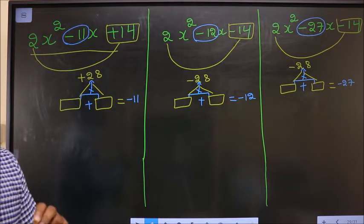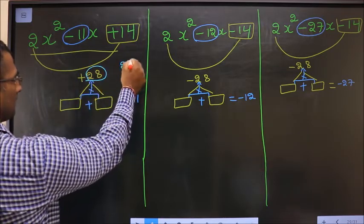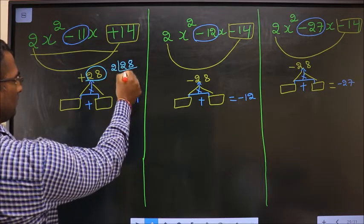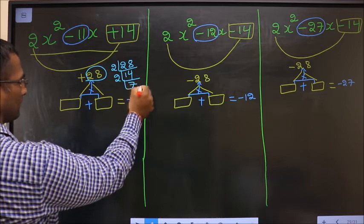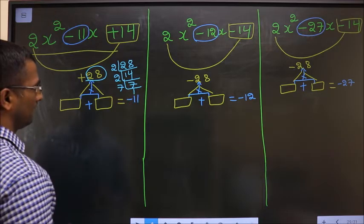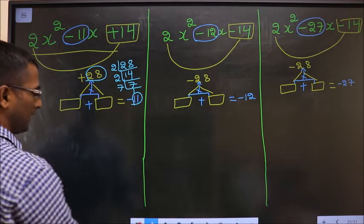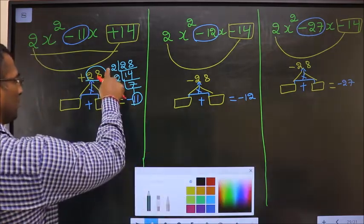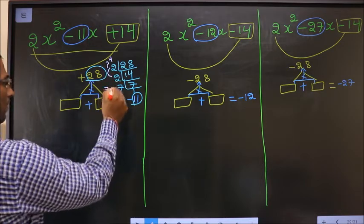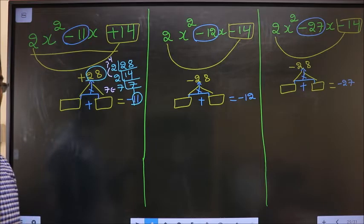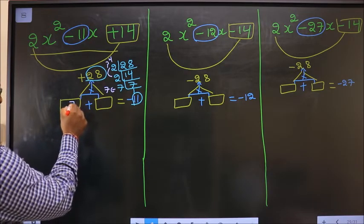To find those two numbers, take the LCM of 28: factors are 2, 14, then 2, 7, giving 7 and 1. The two numbers are 4 and 7, since 7 + 4 = 11 and 7 × 4 = 28.